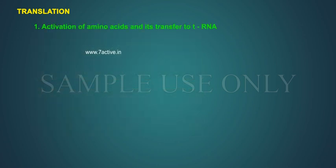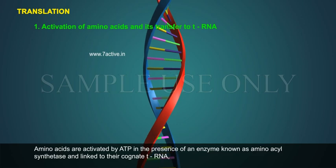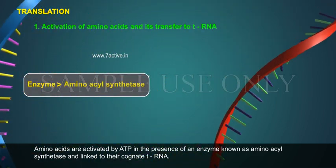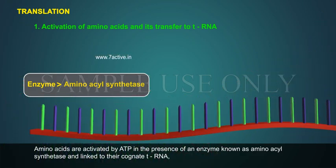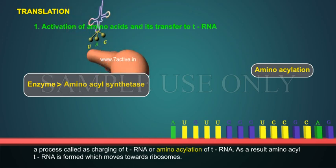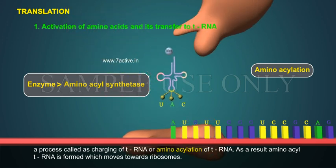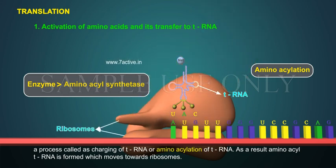Activation of amino acids and its transfer to tRNA: Amino acids are activated by ATP in the presence of an enzyme known as aminoacyl synthetase and linked to the cognate tRNA, a process called charging of tRNA or aminoacylation of tRNA. As a result, aminoacyl tRNA is formed, which moves towards ribosomes.